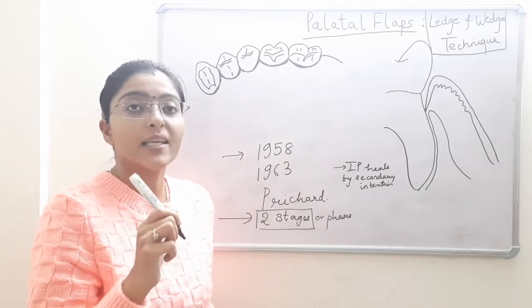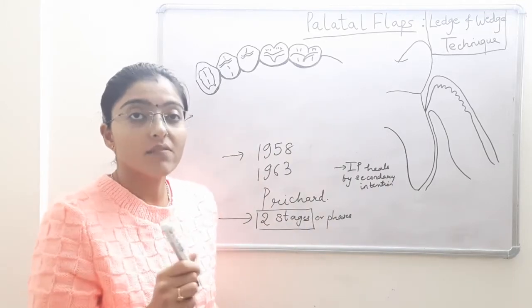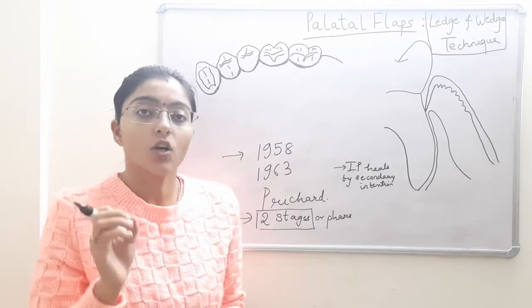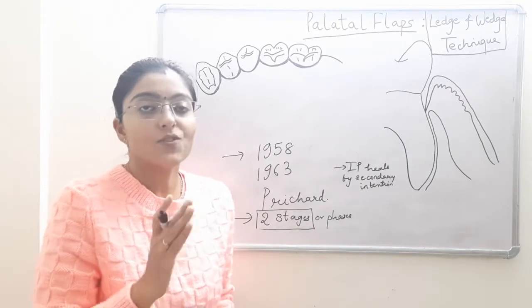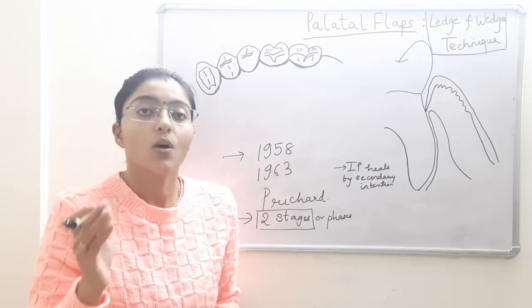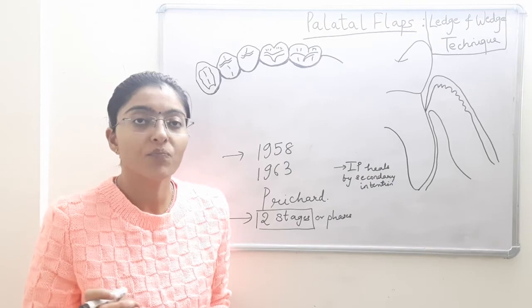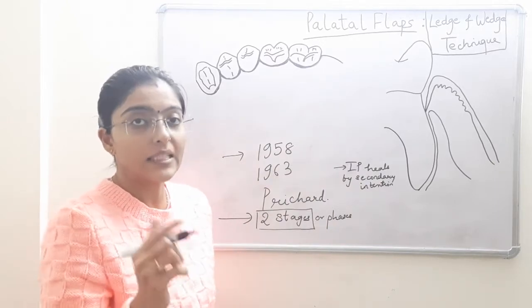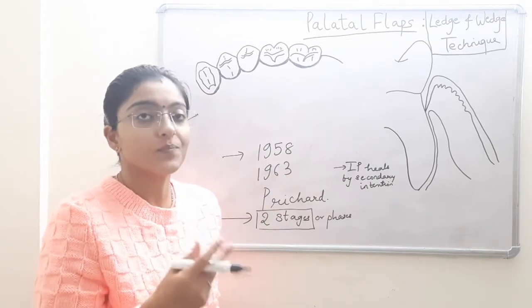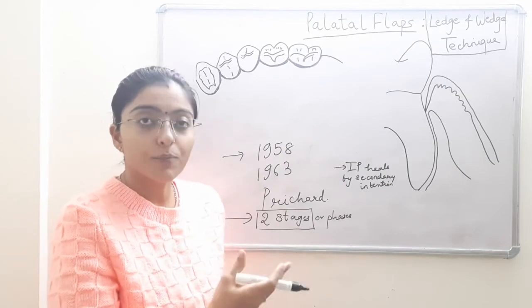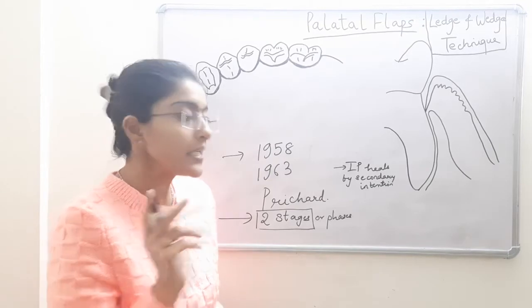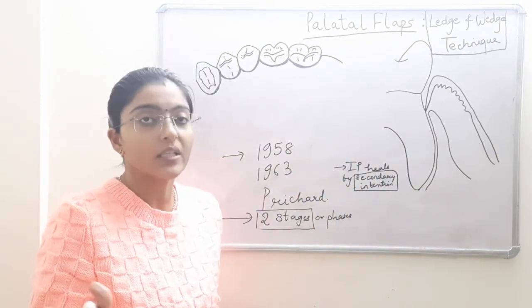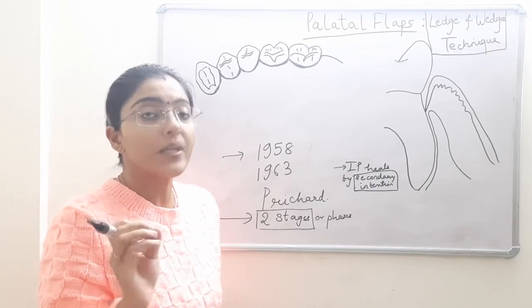Why? Because the stage 1, which is also known as gingivectomy, is a straight incision gingivectomy and not a scalloped incision gingivectomy. If you refer to the textbook Lindhe, it discusses both types of gingivectomy — one is straight incision and the other is scalloped or beveled incision. What we perform routinely is a beveled incision gingivectomy, but in this technique we perform a straight incision gingivectomy, and that is why all of the interproximal tissue is excised and resected.